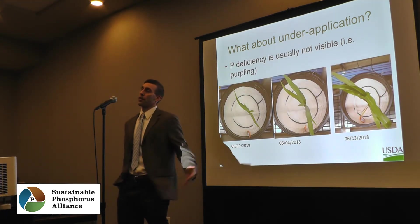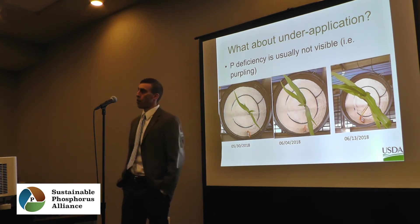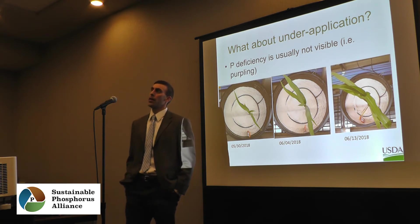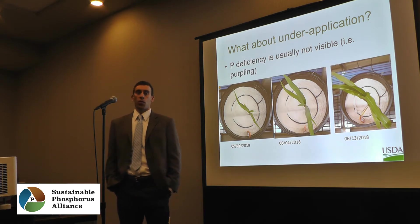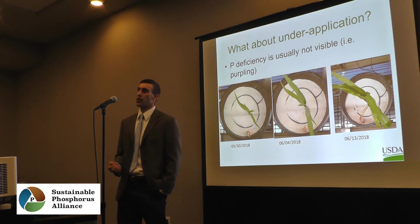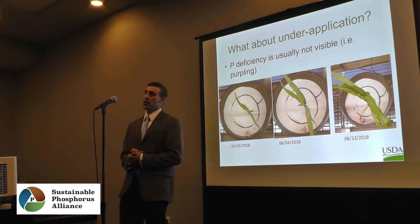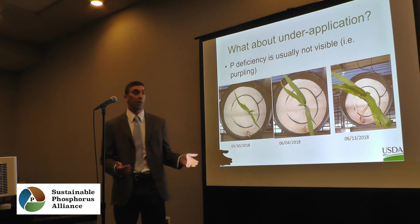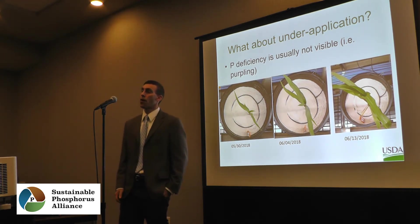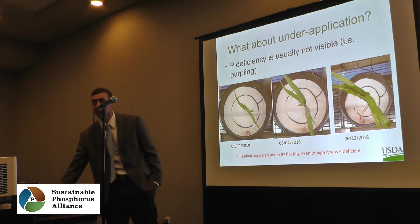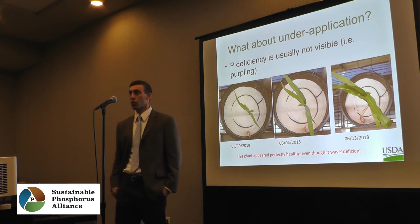Some people claim they've never seen purple corn and therefore never under-apply. Keep in mind that corn only turns purple with a visible phosphorus deficiency under extreme conditions — it's very rare. You have hidden hunger, and a lot of times you just won't see it. For example, a corn plant can look perfectly healthy growing through various stages, yet be deficient in phosphorus and have reduced yield. That was demonstrated under controlled experimental conditions.